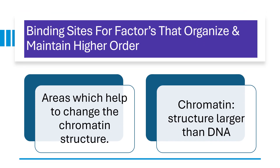The second class is binding sites for factors that organize and maintain higher order. These are areas which help change the chromatin structure. Chromatin is the structure larger than DNA — going up the organizational chain, you have your DNA, and then one step higher would be your chromatin.